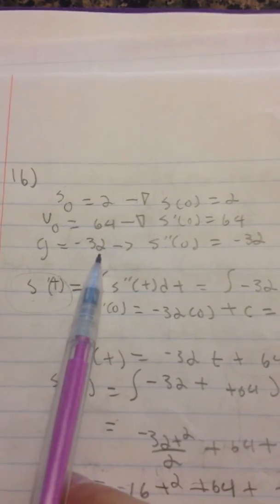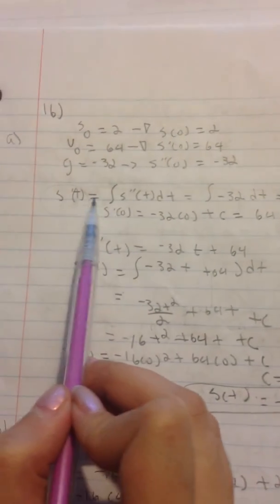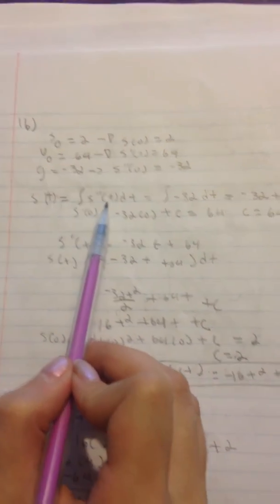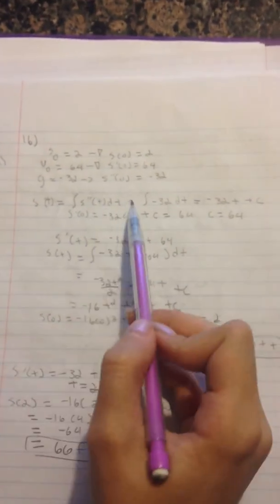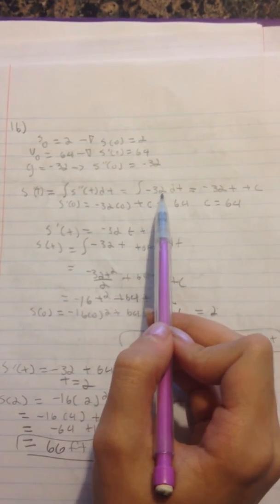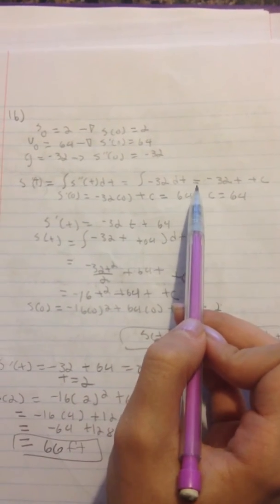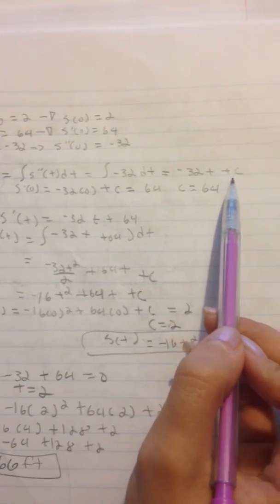And G equals negative 32, which goes to S double prime of T equals negative 32. S prime of T equals the integral of S double prime of T DT, which equals integral of negative 32 DT, which equals negative 32T plus C.